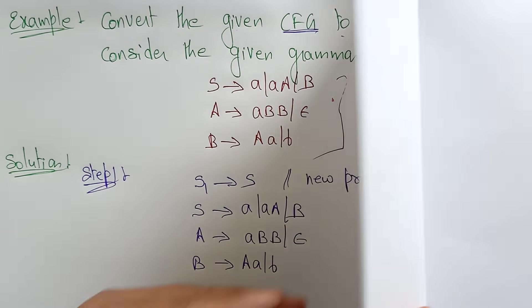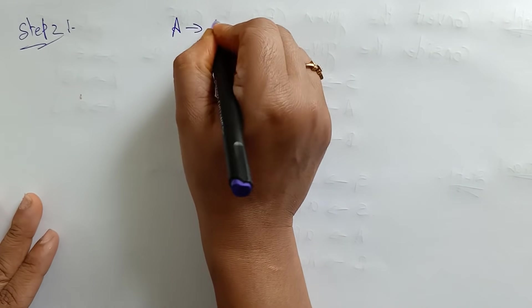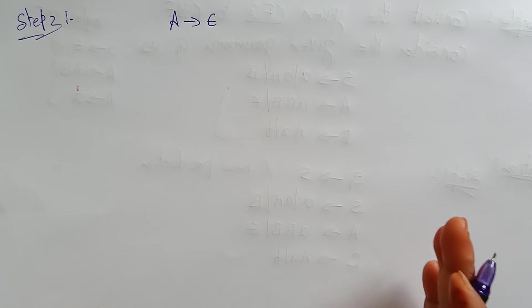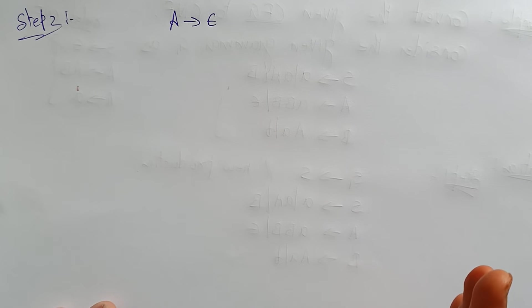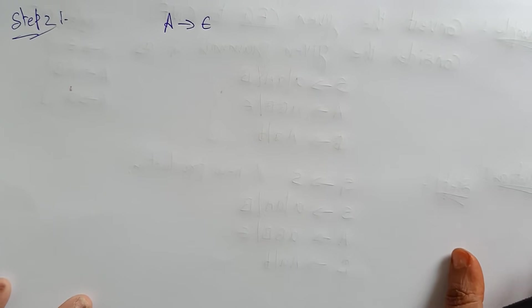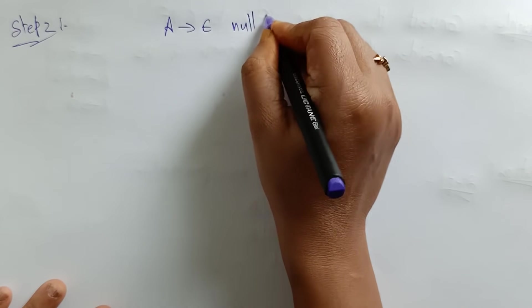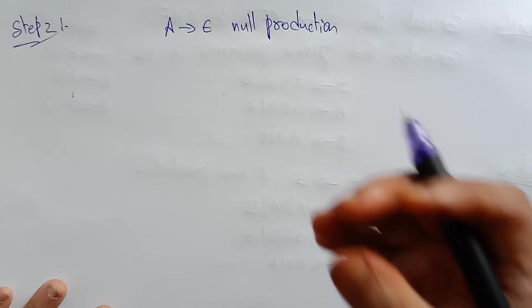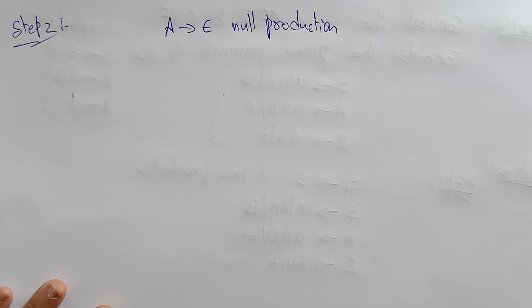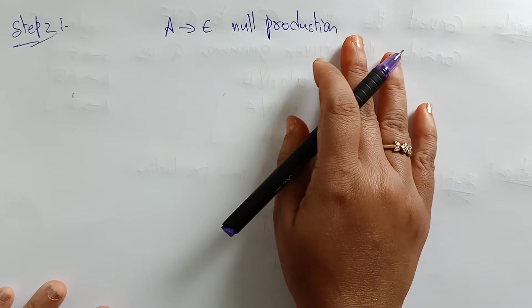Now coming to the second step. Grammar G1 contains A determines epsilon — that is a null production, and we have to remove it. If any null productions are present, only the start symbol is allowed to have null productions according to our rules. But here the grammar itself contains the null production in A, so we need to remove it. We have to remove epsilon by eliminating null productions, unit productions, and useless productions to simplify the context-free grammar.